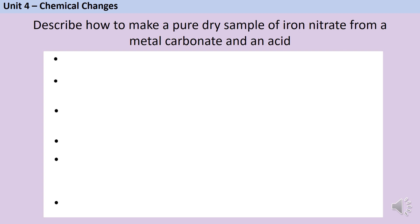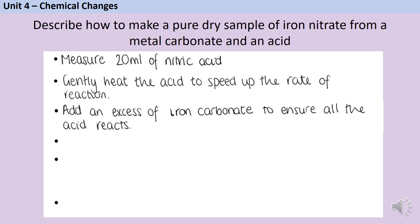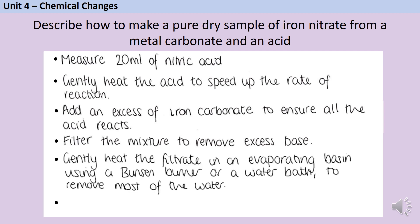Here's one more example: describe how to make a pure dry sample of iron nitrate from a metal carbonate and an acid. Since I'm making iron nitrate, I'll use iron carbonate and nitric acid — remember there are only three acid options in GCSE. I start by measuring out some nitric acid, then heat it to speed up the rate of reaction. Once warm, I add an excess of iron carbonate to ensure all the acid reacts. I filter the mixture to remove the excess base, then gently heat it to remove most of the water, and finally leave it to crystallise.